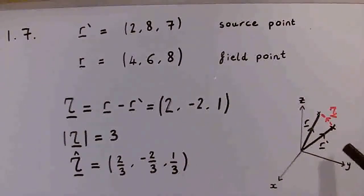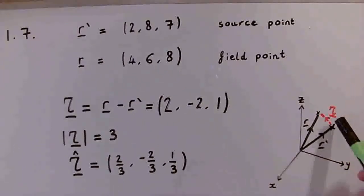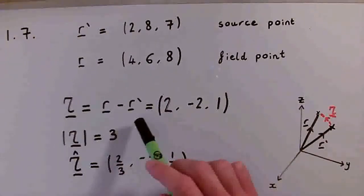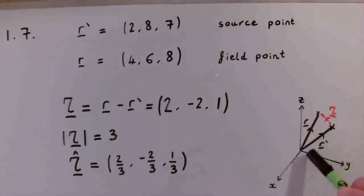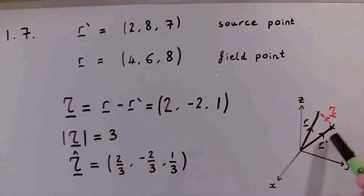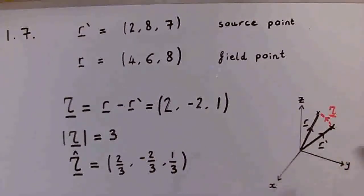And this is just a diagram indicating why the separation vector here in red can be written as R minus R prime, because from the source point here, we need to go backwards along R prime and forwards along R, so we have minus R prime plus R, or equally R minus R prime.